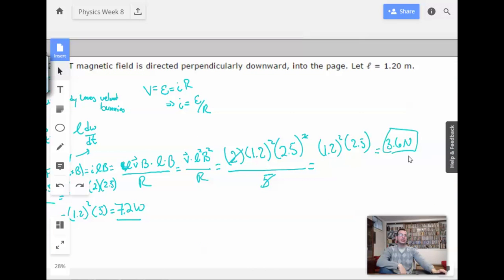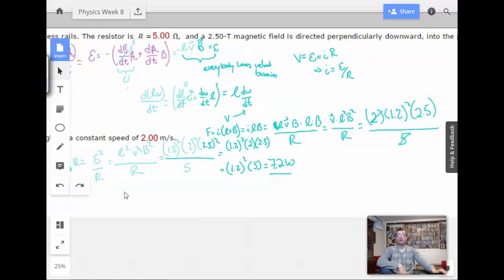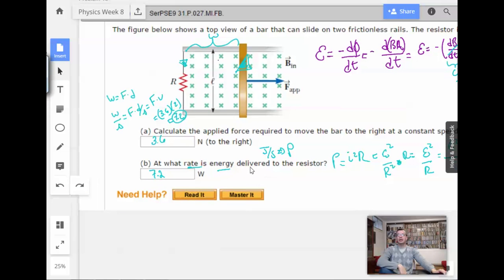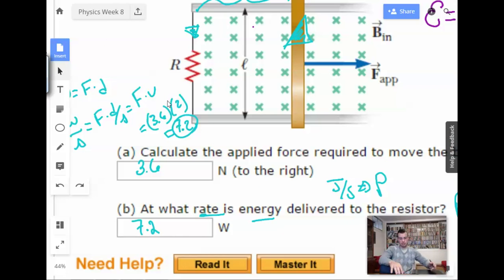In this case, your force is 3.6 Newtons. They then ask you, all right, what rate is energy delivered to the resistor? You can either go back and figure out the current again and then do I squared R, which ended up being V squared over R for us because that's just how it progressed. Or you can do work equals force times distance. Divide both sides by time. Bam. And you have power equals force times velocity.